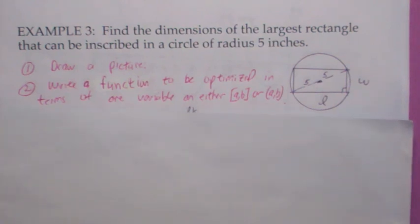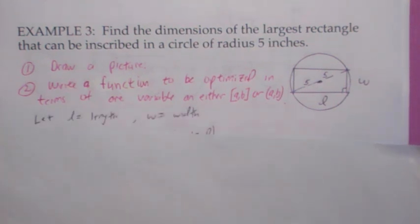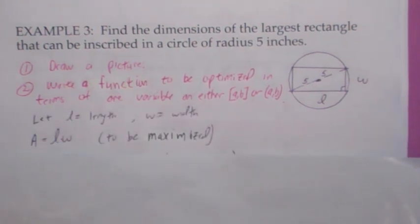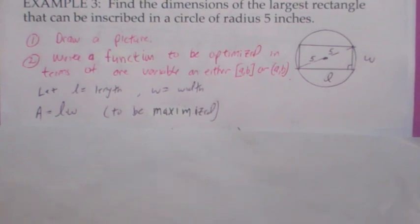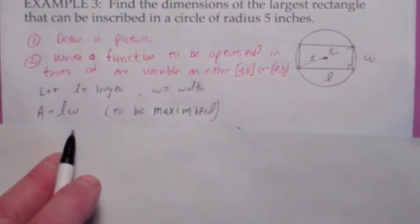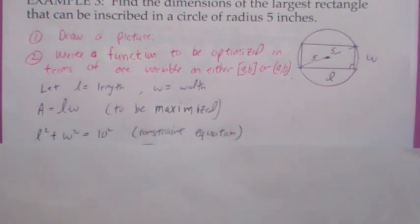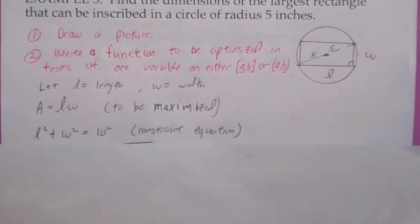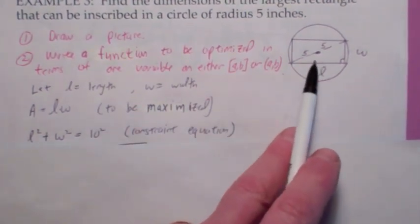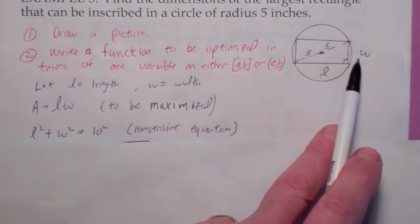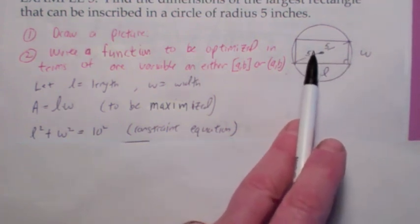So the function we're going to look at is the area function. We know the area of a rectangle is length times width. But again, that problem that seems to arise a lot, we want to get this just in terms of one unknown. We're going to use the constraint equation, which is the good old Pythagorean theorem. Notice L² + W² = 10², not 5².